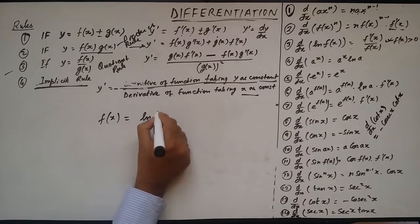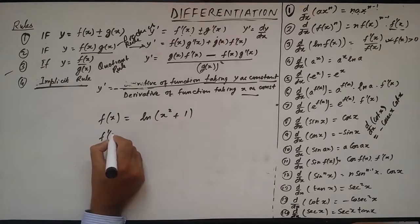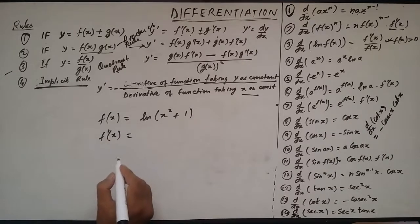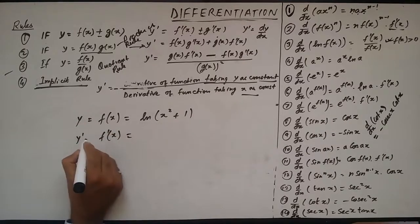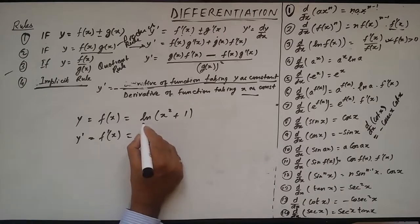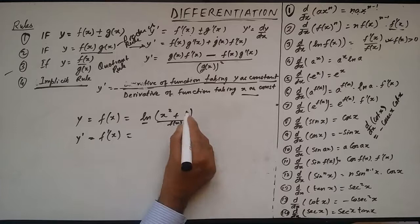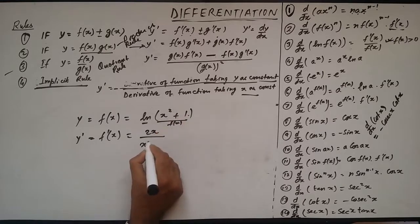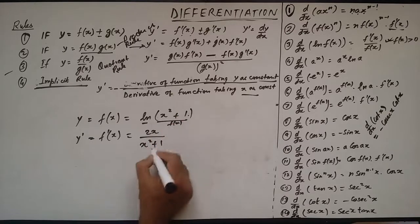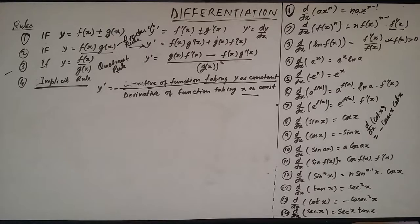The function f(x) is ln(x² + 1). The derivative of this function — we can write it as y' — is: for ln of a function, the derivative is the derivative of that inner function divided by the function itself. The derivative of x² + 1 is 2x, so the answer is 2x upon (x² + 1).